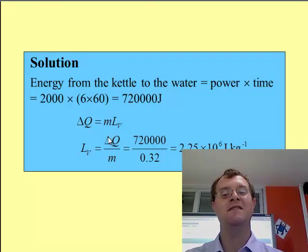If I rearrange this, the latent heat of fusion is the amount of energy gone in divided by the mass of change state material, which gives a value of 2.25 times 10 to the 6 joules per kilogram. So there's one example.